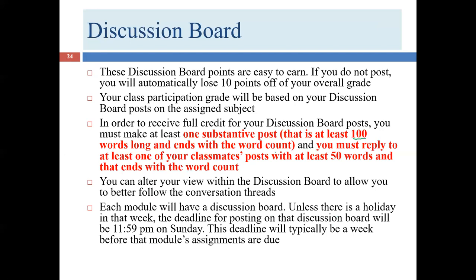Occasionally a student will claim 107 words when they clearly have 80. I can eyeball posts that are under 100 words and I do count them. A significant discrepancy between your count and mine is an academic dishonesty issue. If all you have is 87 words, list 87 — better to lose a point or two for being honest than to misrepresent the count and face an academic dishonesty issue.